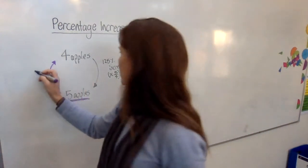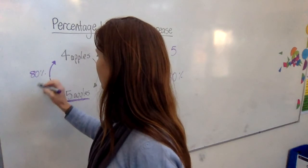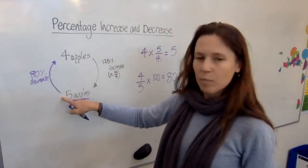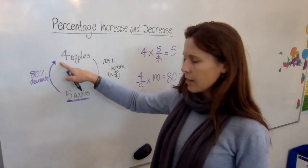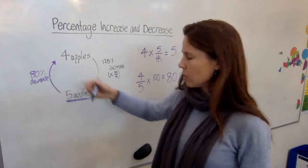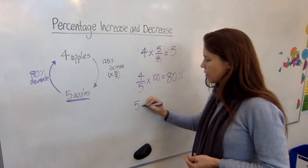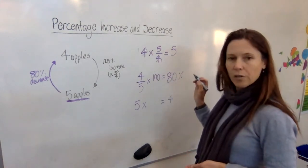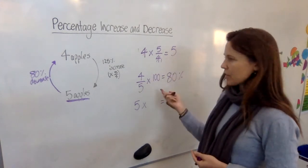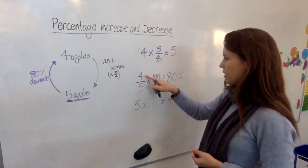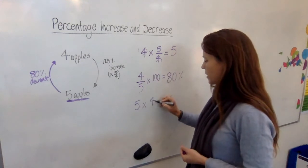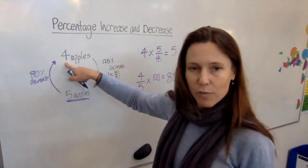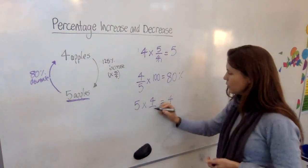So, here, we could say this is an 80% decrease, but what number would we have to multiply five by to get four? Let's think about it. Multiply five by something to get four. Well, we've multiplied it by 80%. What's 80% as a fraction? Four-fifths. So, we basically just said, give me four-fifths of what I got now. That gives you four, doesn't it?